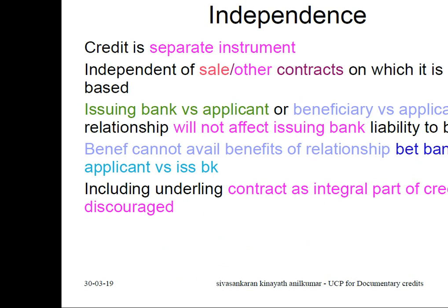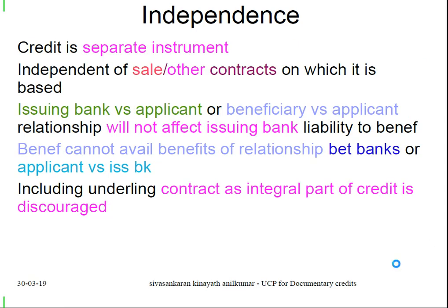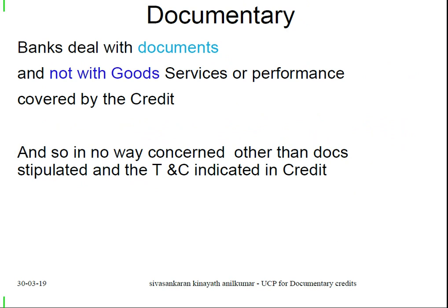Independence: A credit is a separate instrument, independent of the sale or other contracts on which it is based. The relationships between issuing bank and applicant, or between beneficiary and applicant, will not affect the credit or the issuing bank's liability to the beneficiary. The beneficiary cannot avail itself of the benefits of the relationship between banks or between the applicant and the issuing bank. Mentioning a contract reference in the credit is only for identification purposes and does not make the contract an integral part of the credit. Credit is documentary — banks deal only with documents, not with goods, services, or performance covered by the credit, and payment is based solely on the documents submitted.